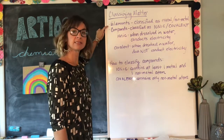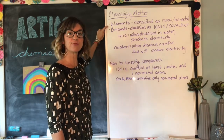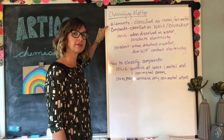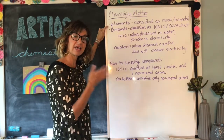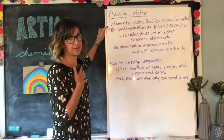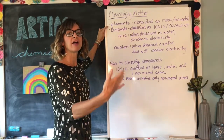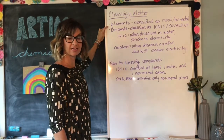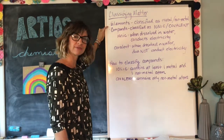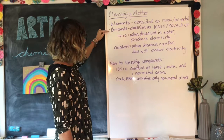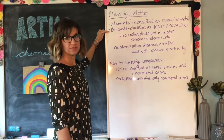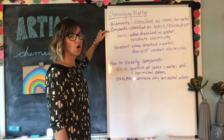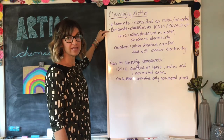Okay, classifying matter. First, elements. Elements, like we've talked about before, can be classified as either metal, if they are to the left of the jagged line on the beloved periodic table, or they are non-metals if they are to the right of the jagged line. Compounds, which we've just been learning about, are classified as either ionic or covalent.